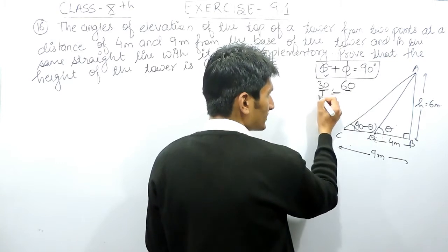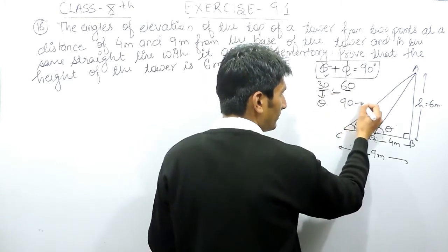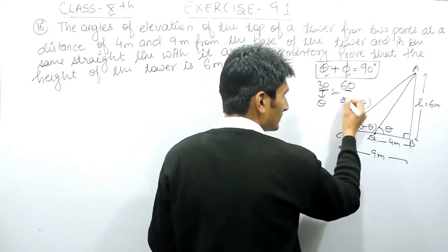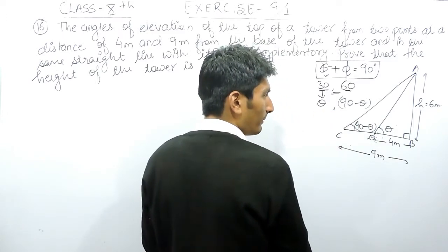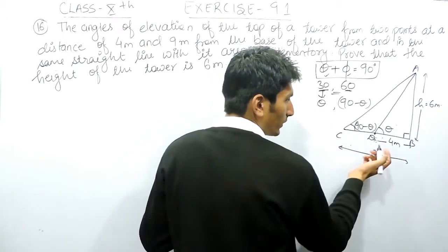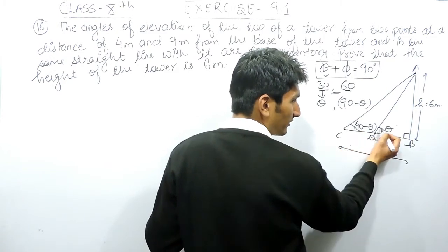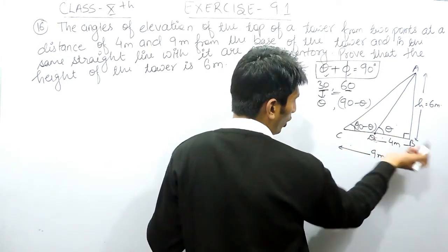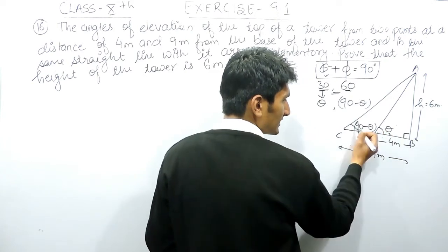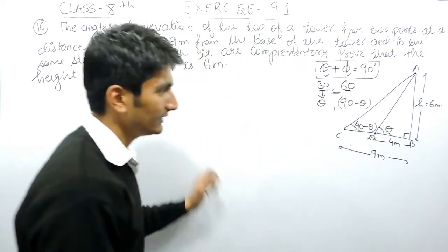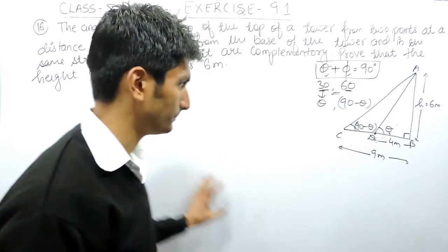If one angle is theta, the second angle will be 90 minus theta — these two are known as complementary angles. You can suppose either angle as theta; the other will be 90 minus theta. You can choose either arrangement and it won't make any difference to your solution.